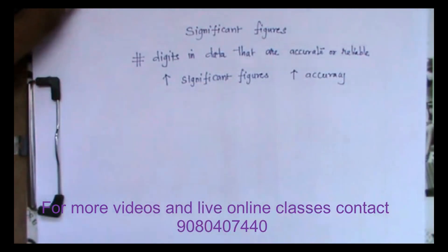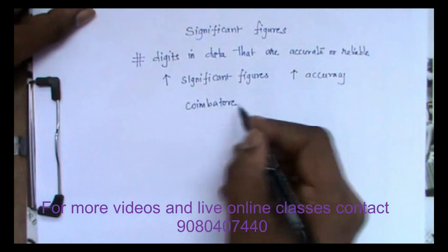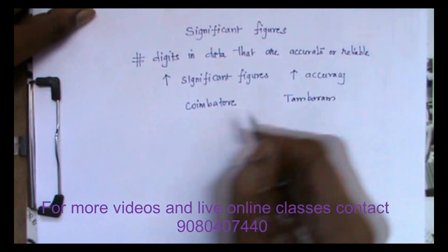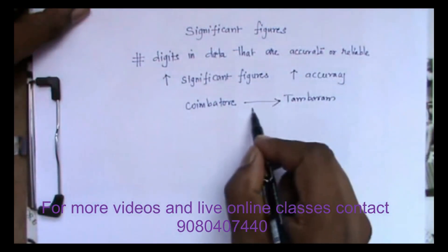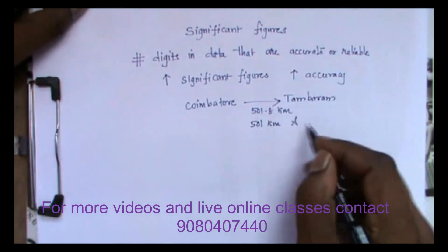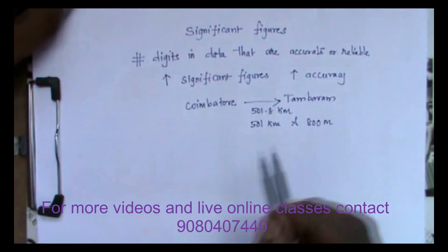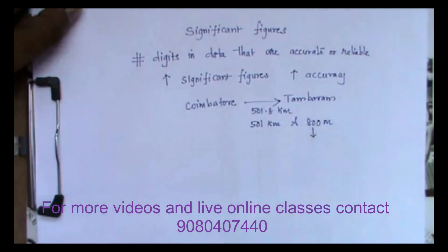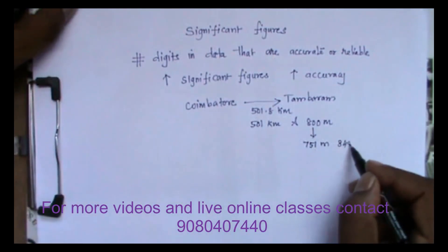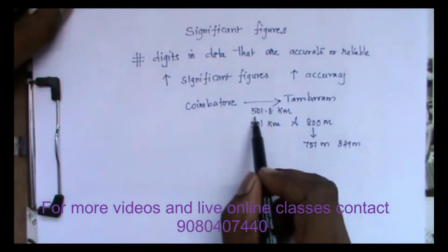You should have a clear idea about accuracy and precision, which we will discuss later. We can understand this concept with a simple example: the distance between Coimbatore and Tambaram. The distance is 501.8 kilometers. I can write this as 501 kilometers and 800 meters. According to this value it is 800 meters, but I am sure it will not be exactly 800 meters. Considering the rounding off, this may be from 751 to 849 meters, so this is not highly accurate, and it will be very difficult to use this value in calculations.